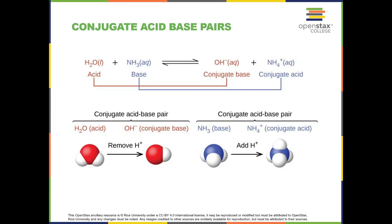Let's look at conjugate acid-base pairs, using the example of water reacting with ammonia to form hydroxide and ammonium ion. H₂O donated a proton to NH₃. What's left is OH⁻ — water lost one H and one positive charge, so it became negative. NH₃ gained a proton from water and became NH₄⁺ — it gained an H and a plus charge. Note that both reactants were neutral, while the products carry opposite charges that cancel out.